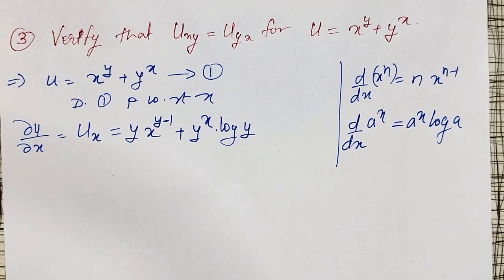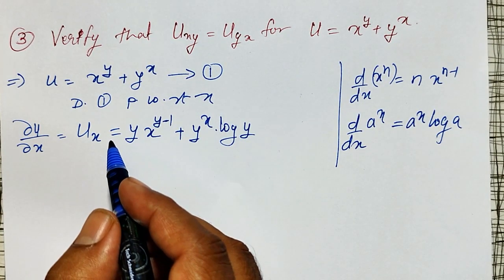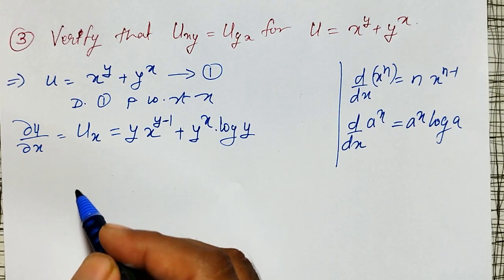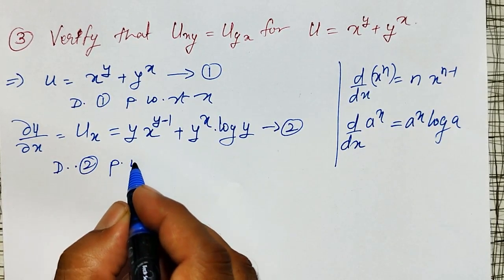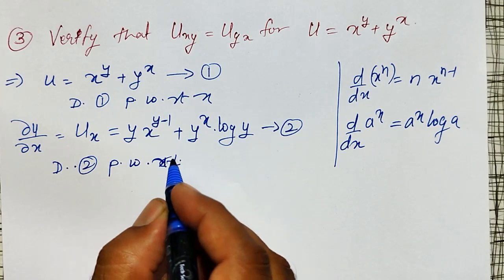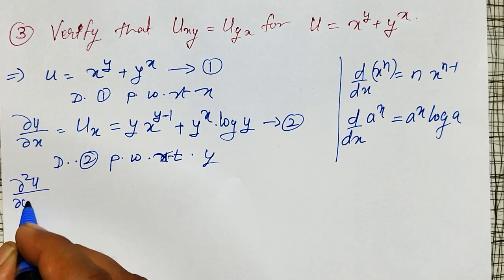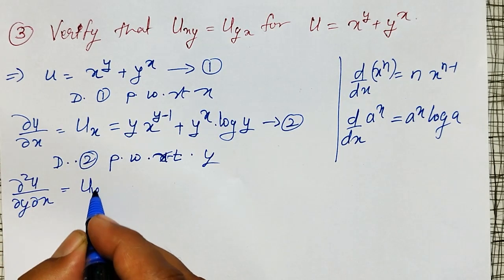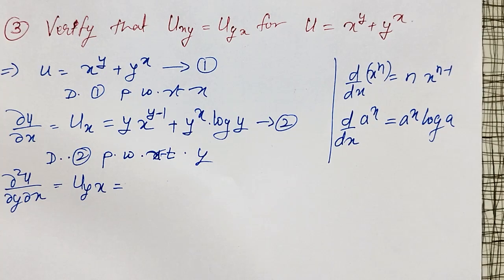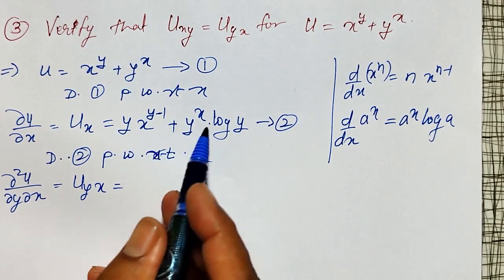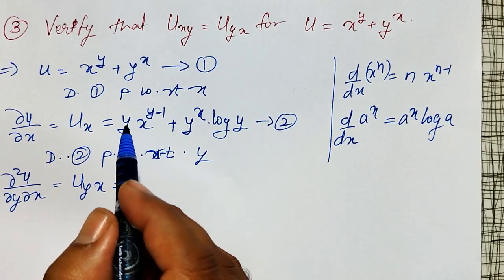To get u_yx, I have to differentiate equation 2 with respect to y. Differentiating equation 2 partially with respect to y gives ∂²u/∂y∂x, which is u_yx. The first term is y into x to the power y minus 1, which is a product of two y-terms, so I have to use the product rule.